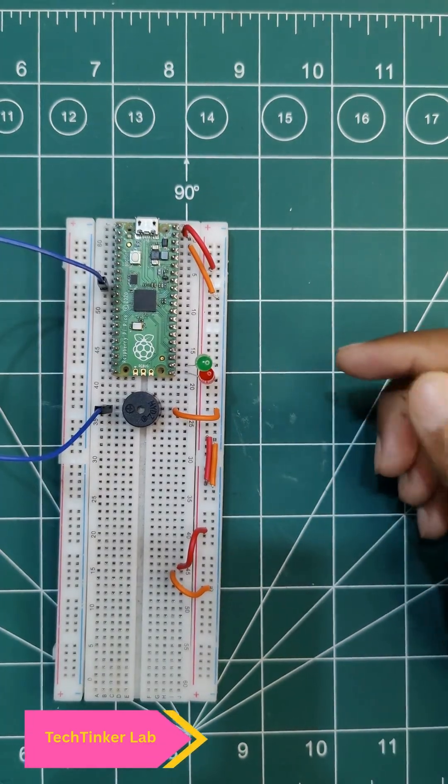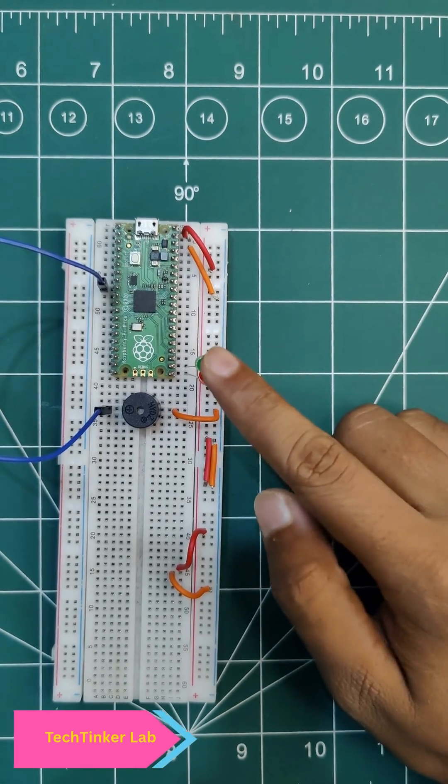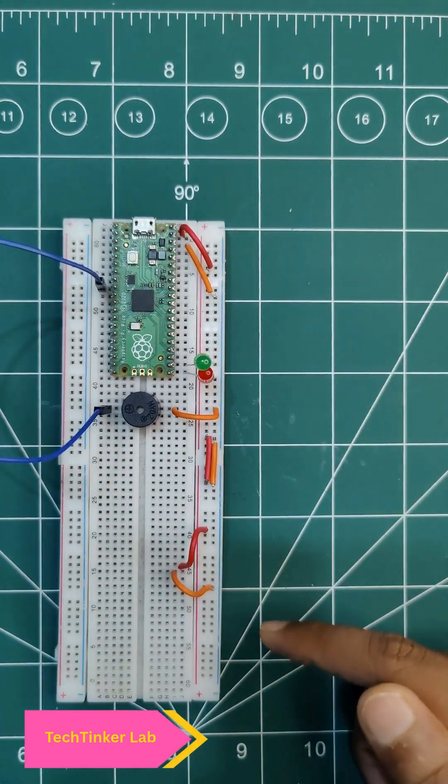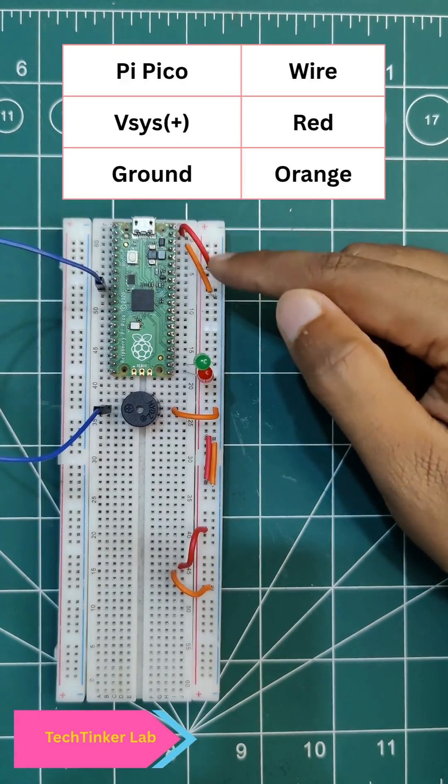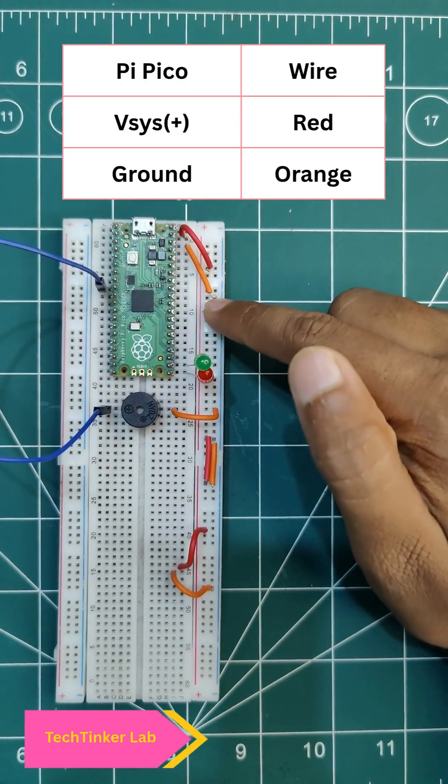Now let's do the connection. To make the video short I have already connected the red, green LED and the buzzer. And to make this rail positive and negative I have connected short jumping wires. This is the positive one and this is the negative one.